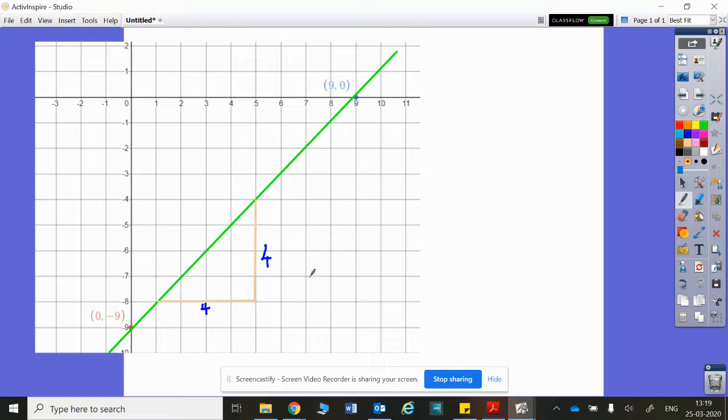And so my gradient, which is M. Hopefully you're aware that that's what we call it, is our rise divided by our run, which is four divided by four, which is equal to one, of course. So the gradient of this line is one.